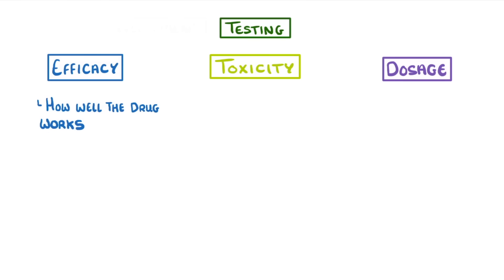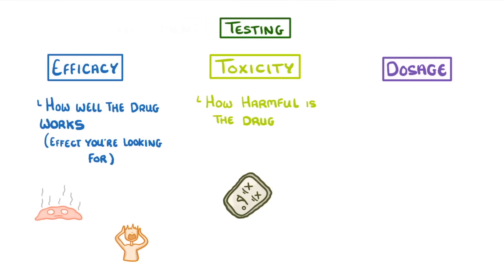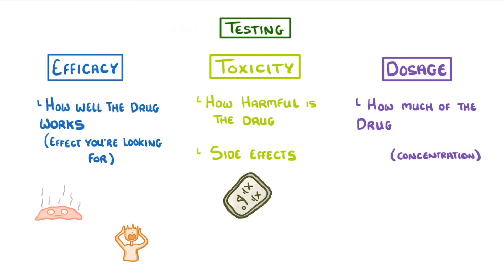Efficacy is how well the drug works — so how well it produces whatever effect you're looking for. For example, how good is an antibiotic at killing bacteria, or how well does a pain relief medication reduce your pain? A drug's toxicity, meanwhile, is how harmful it is — for example, does it damage our cells or have any side effects? And dosage refers to how much of the drug, or what concentration of the drug, should be given. Generally speaking, the more drug we give, the more effective it's going to be, but it will also cause more side effects.